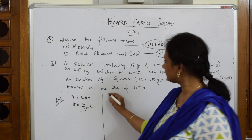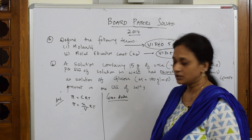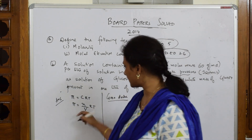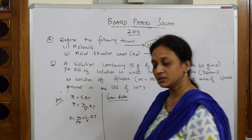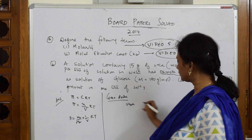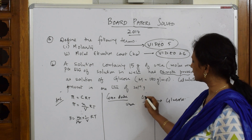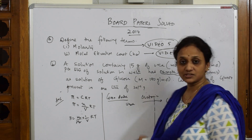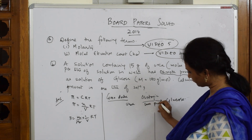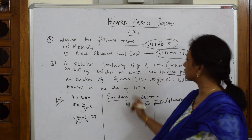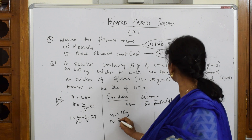Now let us note the given data. They've given a solution containing 15 grams of urea, so π can be written as w₂/M₂ × (1/V) × RT. There are two things: one is for urea and the other is for glucose. Both are isotonic in nature — isotonic means 'iso' means similar, so isotonic means they have similar osmotic pressure. For urea: w₂ = 15 grams, M₂ = 60 grams per mole.